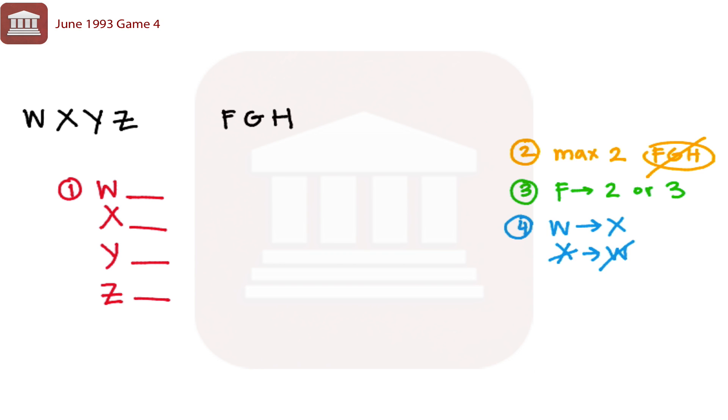Rule number five, if an organism responds to F, then it responds to G. And rule number six, Y responds to F.